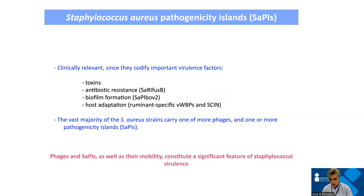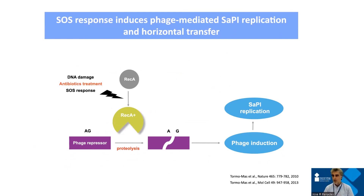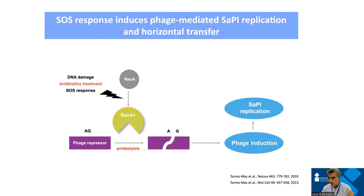SaPIs are mobile and can move from one strain to another very readily, because they have a very interesting life cycle. When we have a strain with a prophage and a SaPI, we can activate the prophage — for example, by treating with antibiotics, which activates the SOS response in the bacterium and degrades the phage repressor. The prophage is induced, exits the chromosome, and starts replicating. As soon as the phage is induced, the SaPI senses that and also excises from the chromosome and starts replicating.